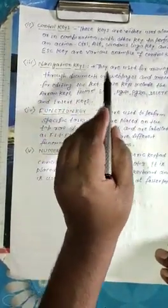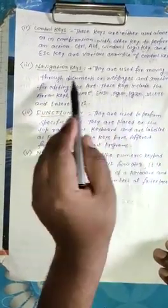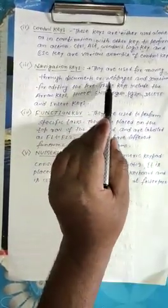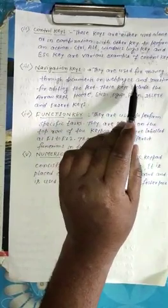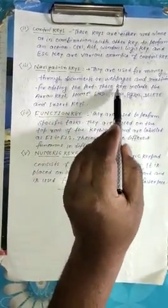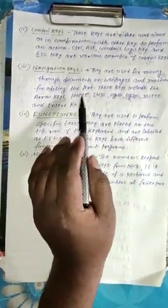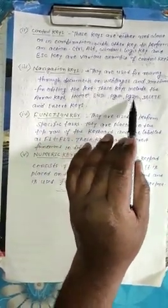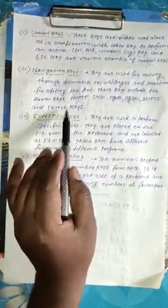Navigation keys - these keys are used for moving through documents or web pages and sometimes for editing text. These keys include the arrow keys, home key, end key, page up, page down, delete key, and insert key.